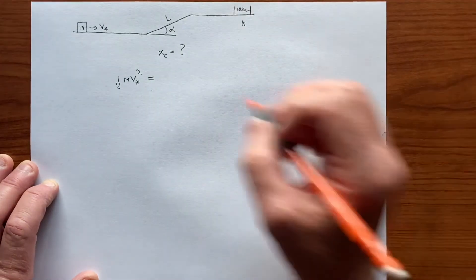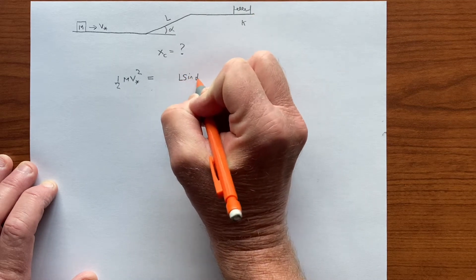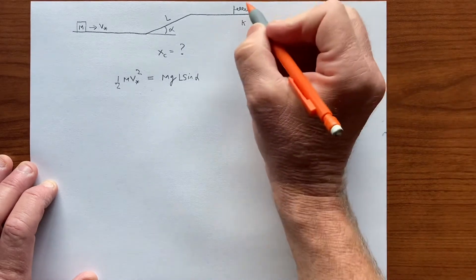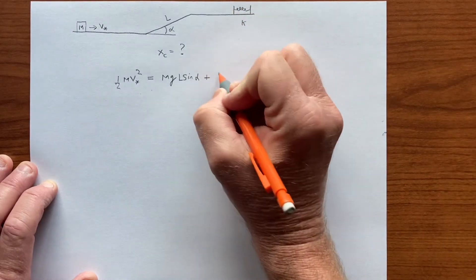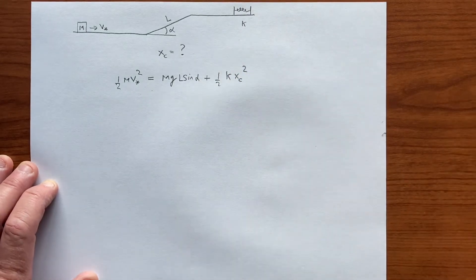some height and that height is L sine alpha. So we have L sine alpha times Mg, and the spring, and therefore one half k times the unknown Xc squared. And so we're solving for the Xc.